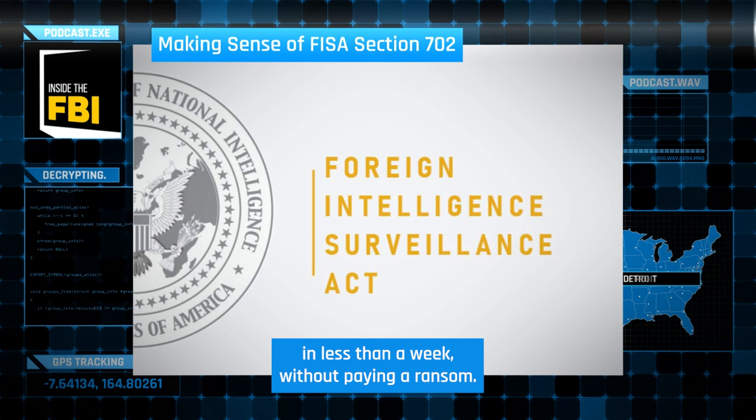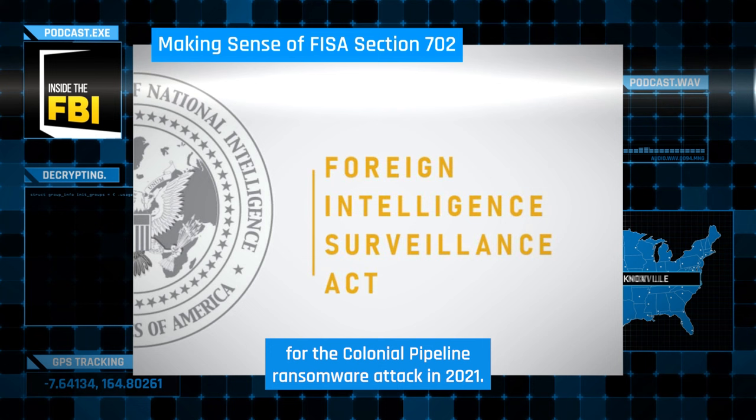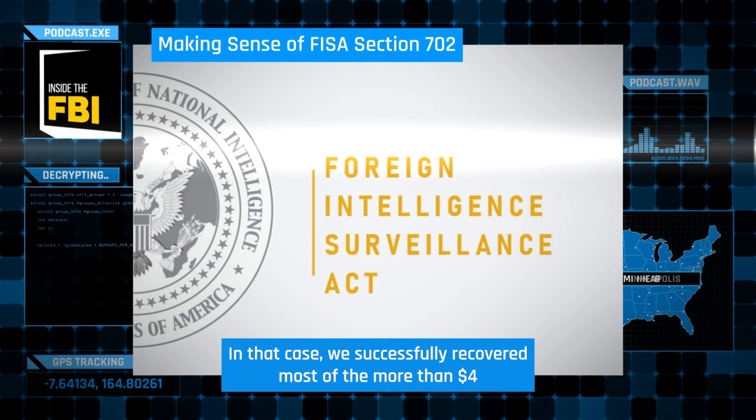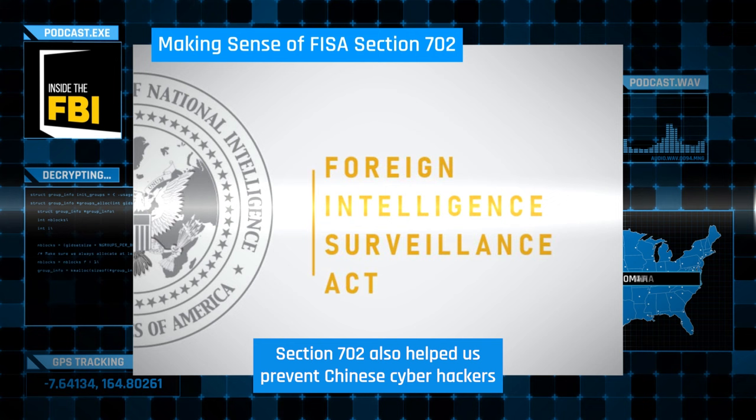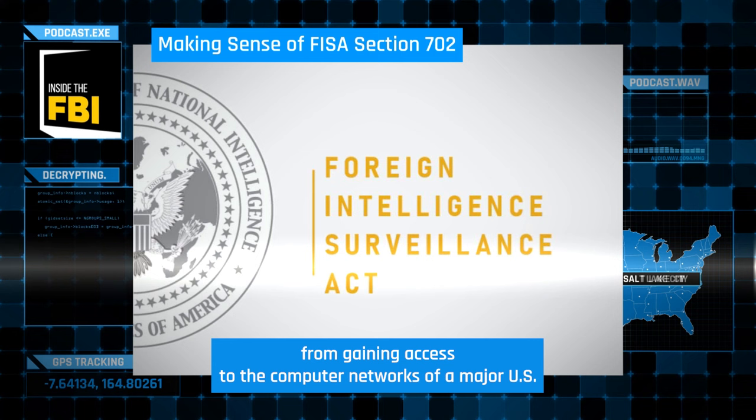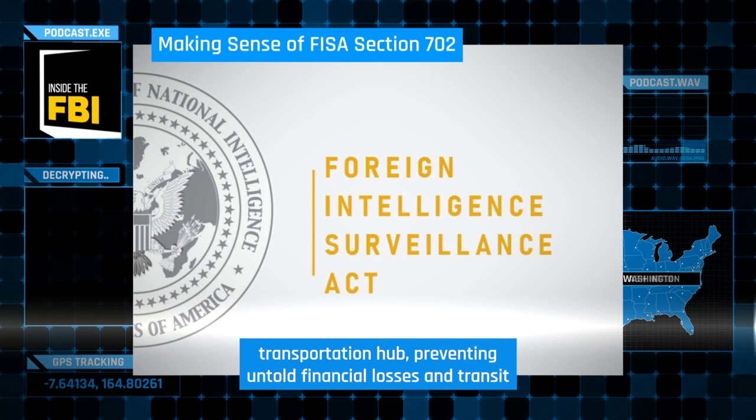We also used Section 702 to identify the hacker responsible for the Colonial Pipeline ransomware attack in 2021. In that case, we successfully recovered most of the more than $4 million ransom payment the company paid to the hacker. Section 702 also helped us prevent Chinese cyber hackers from gaining access to the computer networks of a major U.S. transportation hub, preventing untold financial losses and transit disruptions — and most importantly, protecting American lives.